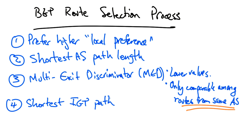Fourth, BGP-speaking routers inside an autonomous system will prefer a BGP route with a shorter IGP path cost to the IGP next hop. The idea is that if a router inside an autonomous system learns two routes via IBGP, it wants to prefer the one that results in the shortest path to the exit of the network. This behavior results in what is called hot potato routing, where an autonomous system sends traffic to the neighboring autonomous system via a path that traverses as little of its own network as possible.